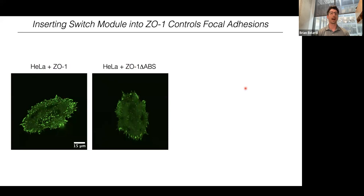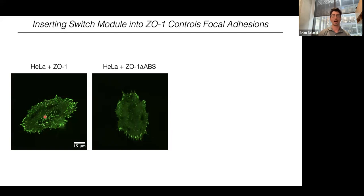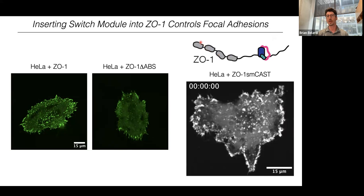Now let me return to the idea of using these CAST molecules within a native protein. The protein ZO1 — when expressed in isolated single HeLa cells — localizes to focal complexes on the periphery of the cell and focal adhesions within the cell body; these are complexes at the surface between the cell and the extracellular matrix. When we remove ZO1's ability to bind F-actin, it doesn't co-localize with focal adhesions in the middle of the cell body — it's mainly with focal complexes on the outer part of the cell.